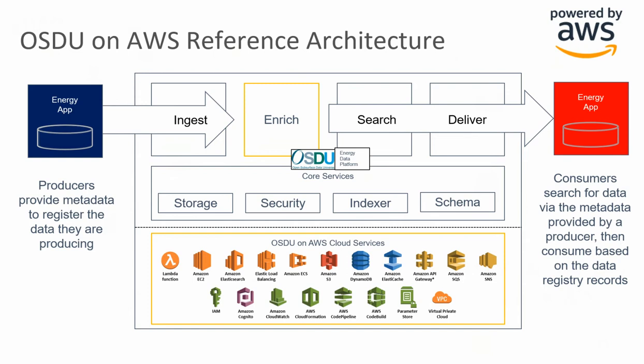Efficiency: OSDU on AWS has been designed to minimize the burden on IT by using serverless technologies and a managed services approach. Cost optimization: OSDU on AWS supports the lowest cost operation, both in terms of eliminating the heavy lifting from IT and in terms of the cost of services. With that, I'll hand it over to Jenny from the Interica team for a short demo.